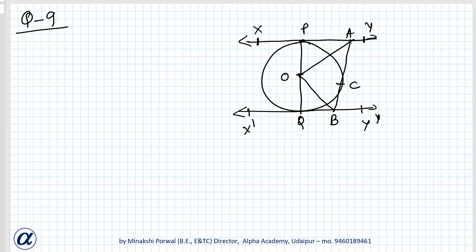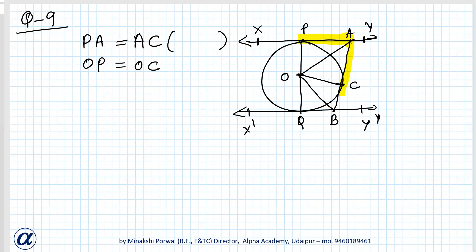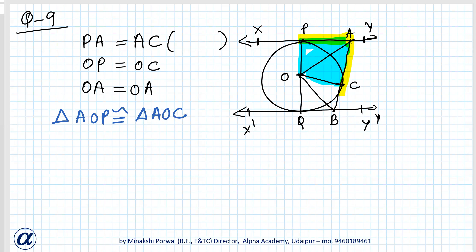From point A, PA equals AC because from an external point the lengths of tangents are equal. We can also join OC. OP equals OC (both radii) and OA equals OA (common). So triangle AOP is congruent to triangle AOC by SSS congruence.